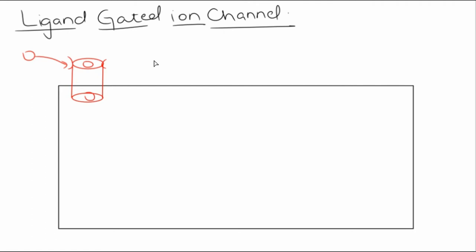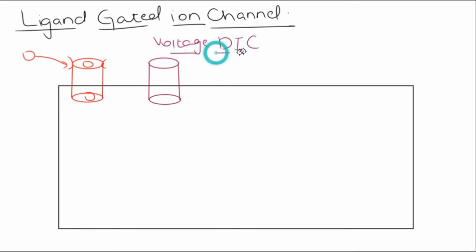There is another class of ion channels present on the cell membrane. Unlike ligand gated ion channels, this class is quite different — it is called voltage-dependent ion channels. Whenever there is a change in the voltage, or the cell depolarizes or hyperpolarizes, and depending upon their nature, these channels will open and start the influx or efflux of cations and anions. That is how these specific ion channels operate.